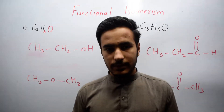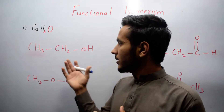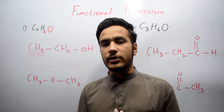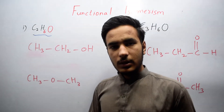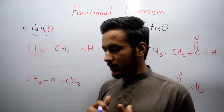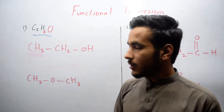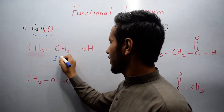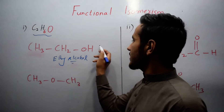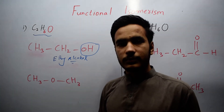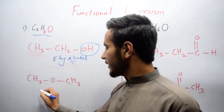Let's move toward an example of how functional group isomerism occurs. The first example is C2H6O. This compound has two isomers. The first one is ethyl alcohol, where the functional group is the alcohol group, OH. The second isomer is CH3OCH3, which is dimethyl ether.